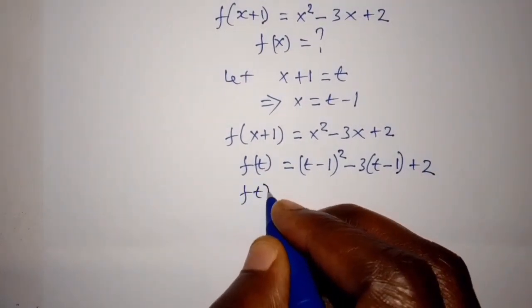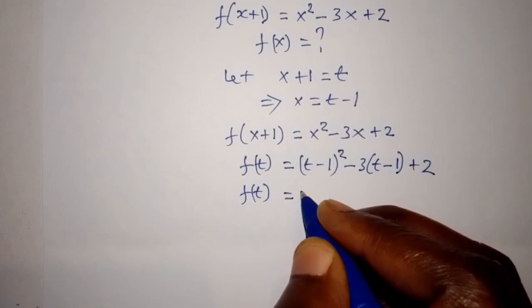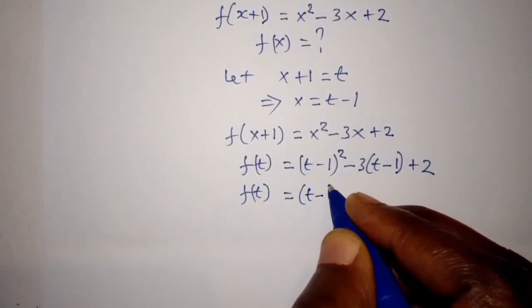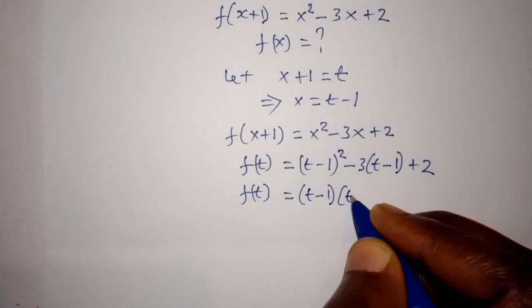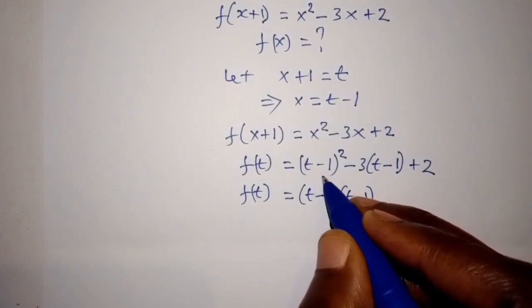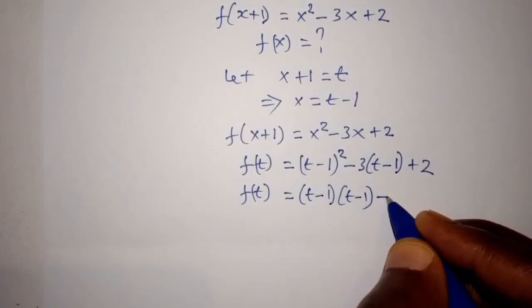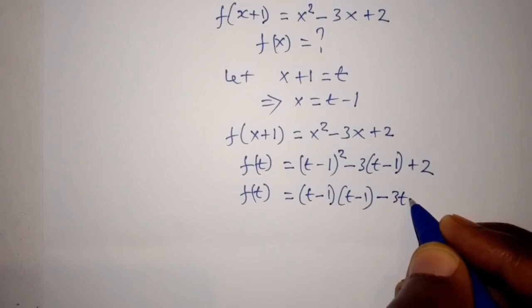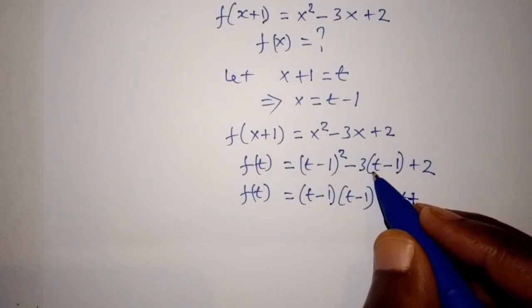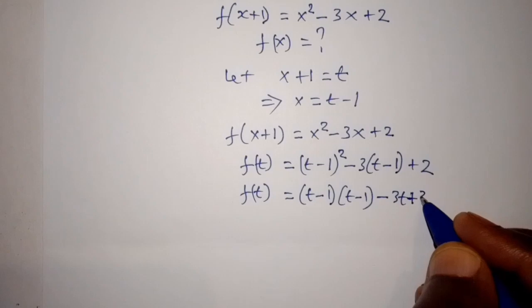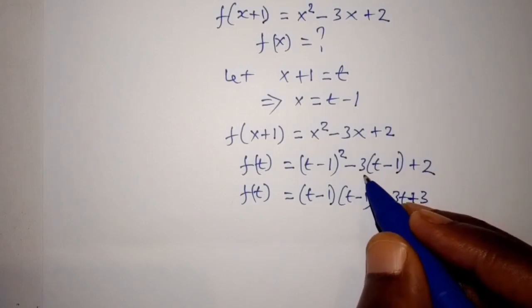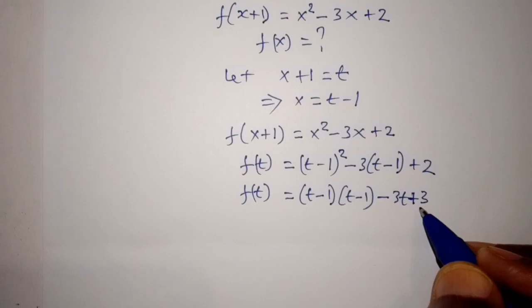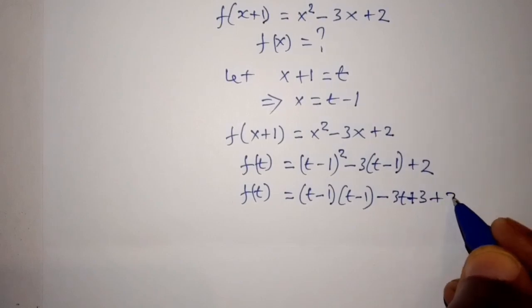So f of t is equal to t minus 1 squared. We expand this minus 3t plus 3. Negative 3 times t is negative 3t, negative 3 times negative 1 is 3, plus 2.